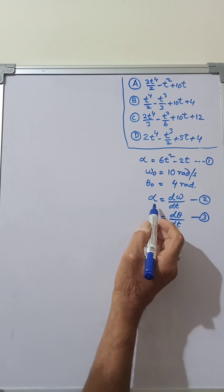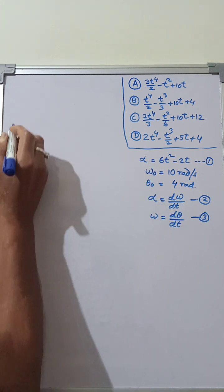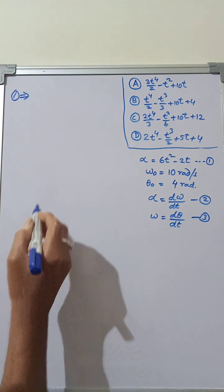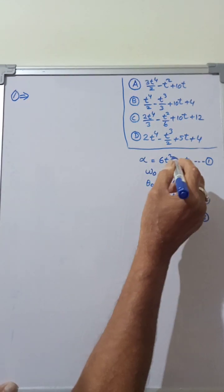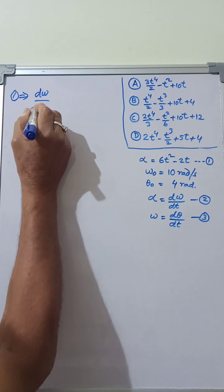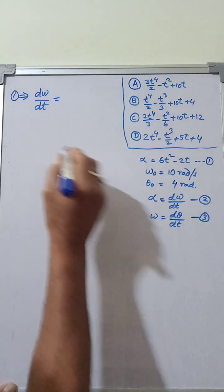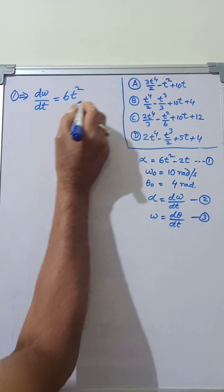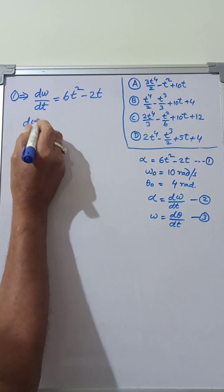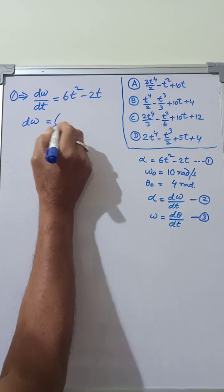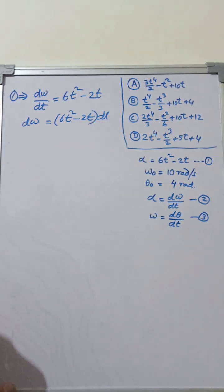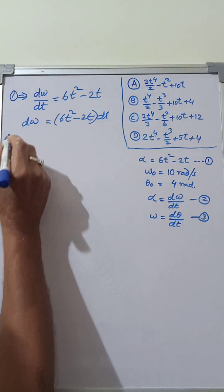Substituting the value of alpha from Equation 2 into Equation 1, we get d-omega by dt equals 6t² minus 2t. Cross-multiplying gives d-omega equals (6t² minus 2t) dt.